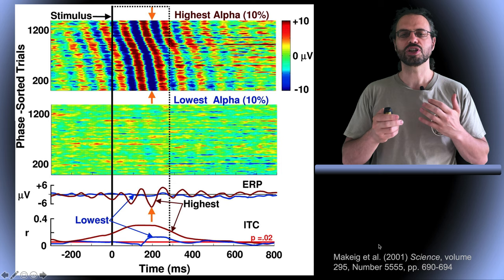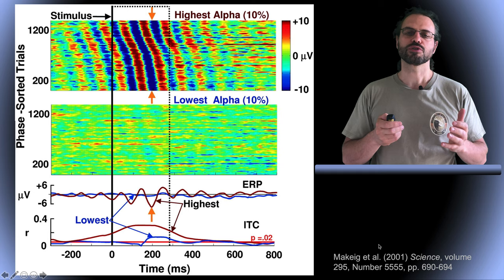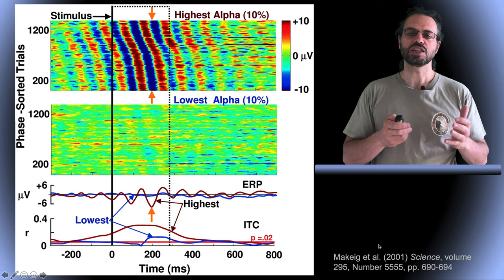Here inter-trial coherence is computed over time windows in the alpha frequency band, so we can see its variation through time. The inter-trial coherence is much larger for trials with high alpha than for trials with low alpha, reflecting more resynchronization of the underlying EEG with the presentation of the stimulus.